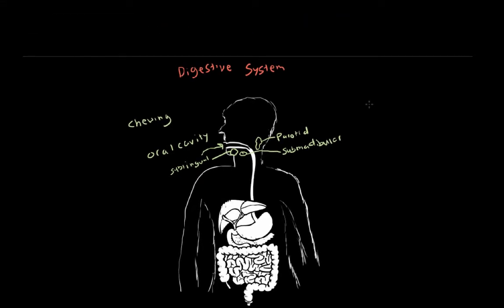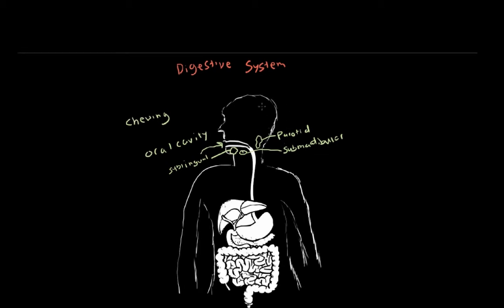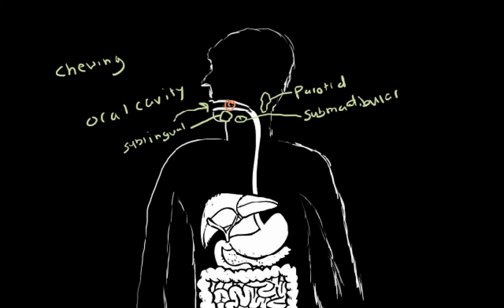After the food is mixed with all the enzymes and the chewing and mastication, what's going to be left is going to be called a bolus. That's just the food that entered — it's now referred to as a bolus. And this bolus is going to move down to the next part of the digestive system.